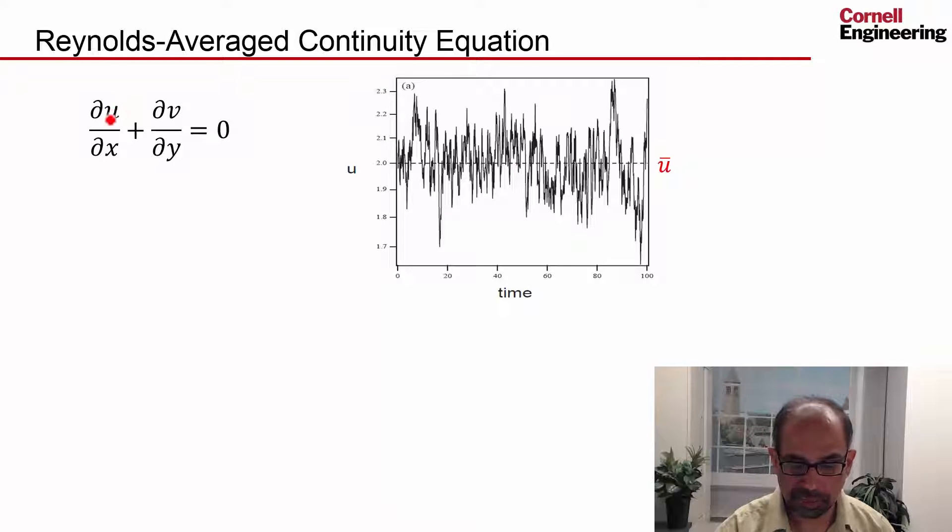So that's fluctuating velocity, and that also is fluctuating crazily. And we want to write this now in terms of the Reynolds average.